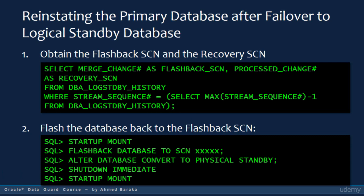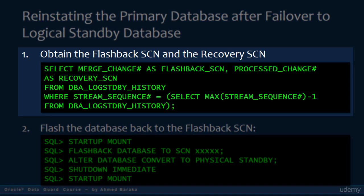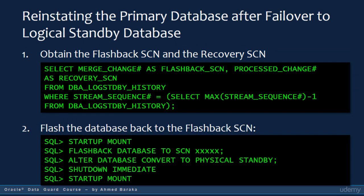The reinstate procedure after failing over to a logical standby database is different from when you reinstate to a physical standby database. This is simply because the SCN number in the primary database is not the same as the SCN number in the logical standby database. First, you have to get the flashback SCN and the processed change from the DBA_LOGSTDBY_HISTORY view, as shown in the slide. The flashback SCN is the SCN to which the failed primary database will be flashed back. The recovery SCN is the SCN to which the failed primary database will be recovered.